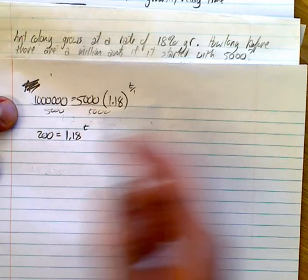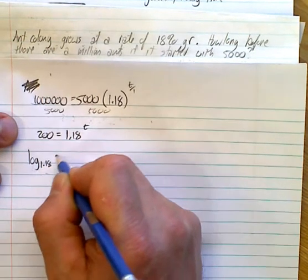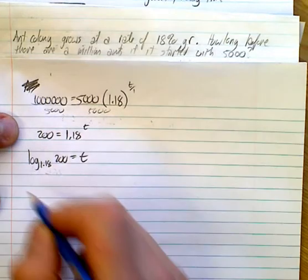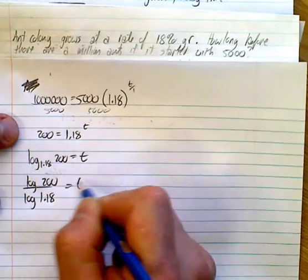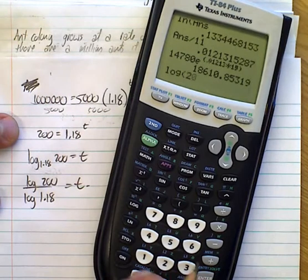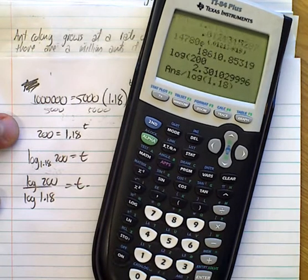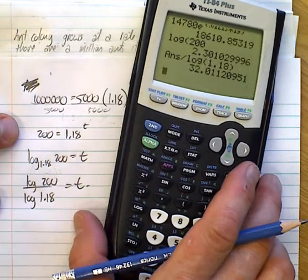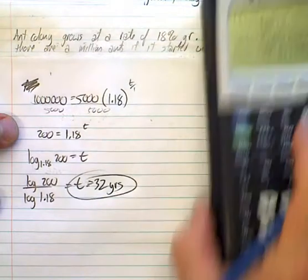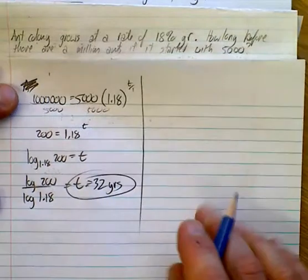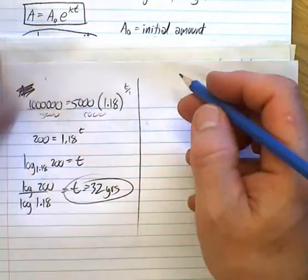This is a pretty simple equation to solve. If you divide both sides by 5,000, you end up with 200 is equal to 1.18 to the power of just T because it's over 1. Now, this is simple log stuff. You log base 1.18 of 200 is equal to T. So, this is going to be log 200 over log 1.18 equals T. So, you get log 200 divided by log 1.18, and you get 32 years, pretty much. So, it takes 32 years to get to a million. That's using this formula here.